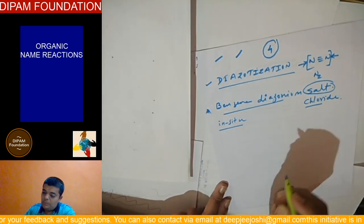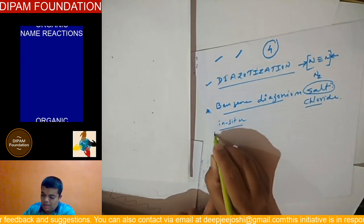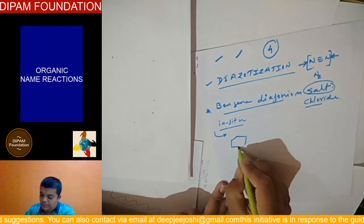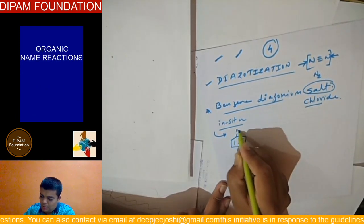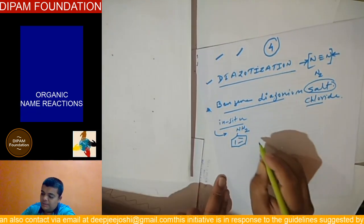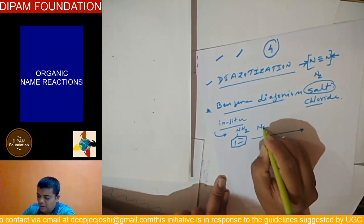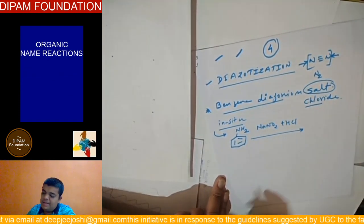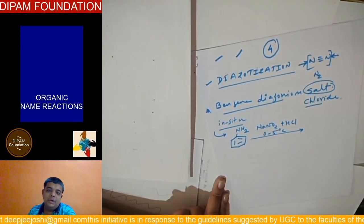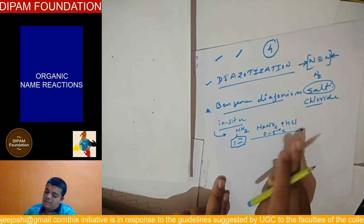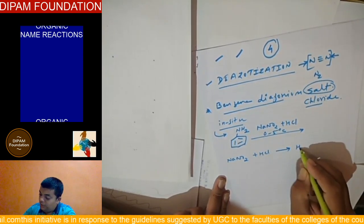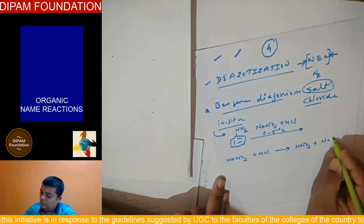If you look very carefully, we will start with a very well-known organic compound, aniline. And when this aniline reacts with NaNO2 and HCl at 0 to 5 degree centigrade, you always get HNO2 and NaCl.